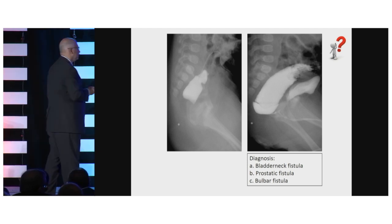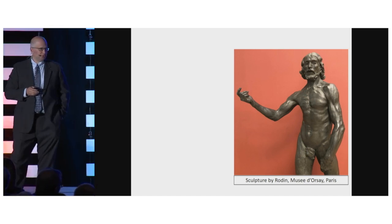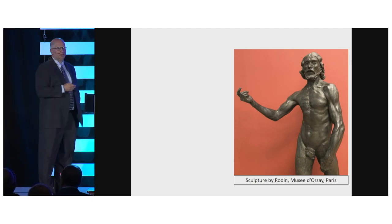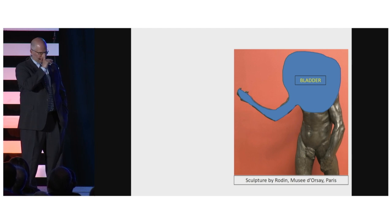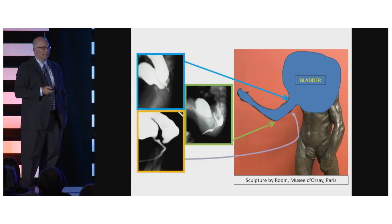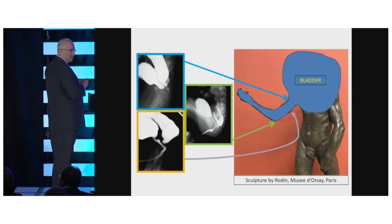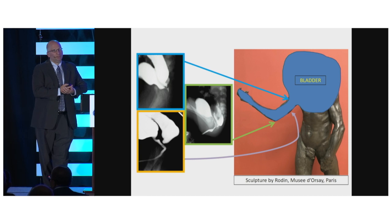I'm going to give you a way to figure this out. When I was at the Musée d'Orsay in Paris I was on a hunt for a really cool elbow. I would suggest that we all agree on the different parts of the urethra and where the fistulas are by this representation of the urethra as an elbow. At the top of the humerus I would consider that a bladder neck fistula, the central portion would be prostatic, and everything at the elbow or lower I would consider bulbar.